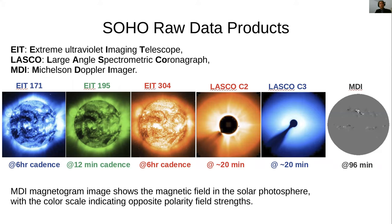The MDI provides magnetograms, measuring the surface magnetic fields of the Sun. The EIT instrument provides data at four different wavelengths, three of which are shown here: at 171 angstroms, 195 angstroms, 304 and 284 angstroms respectively.